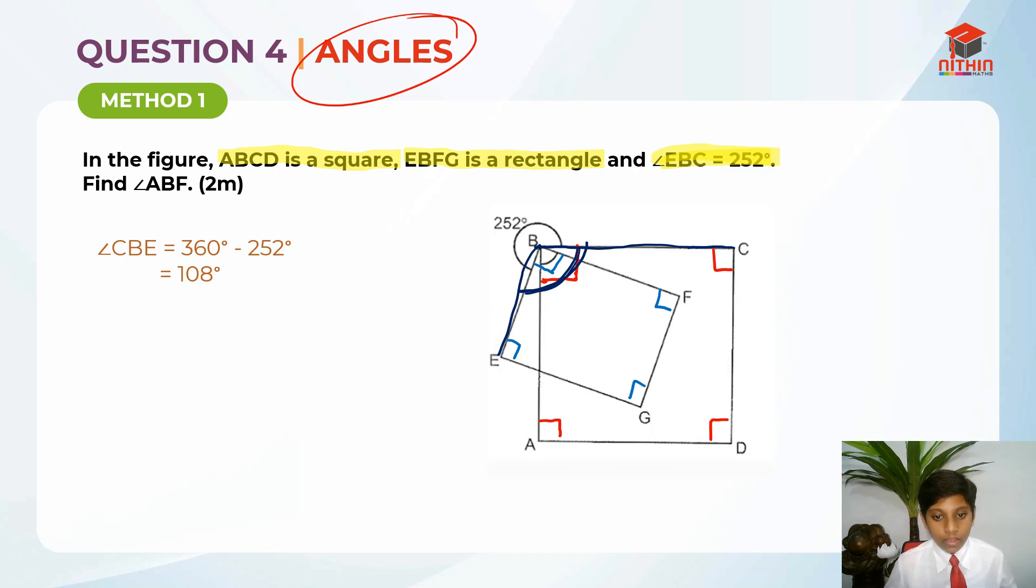Angle CBE, we take 360 degrees minus 252 degrees you'll get angle CBE. And, why do we do so? Because this question is testing us, and this part is testing us on the property of angles at a point. This is the point over here. Angles at a point. Let's write that down. This is the properties of angles at a point.